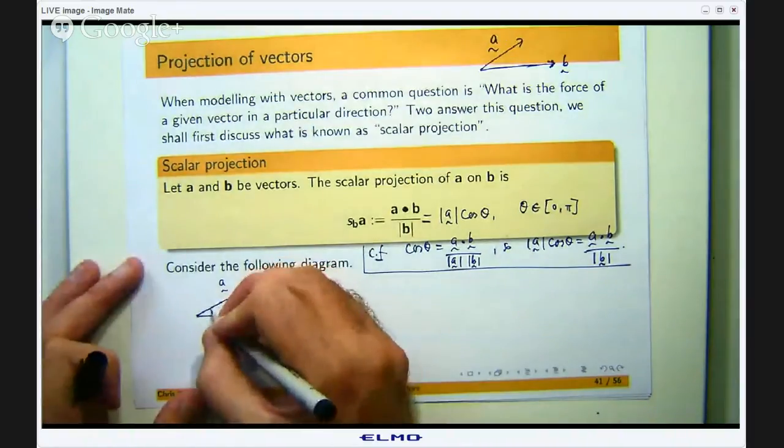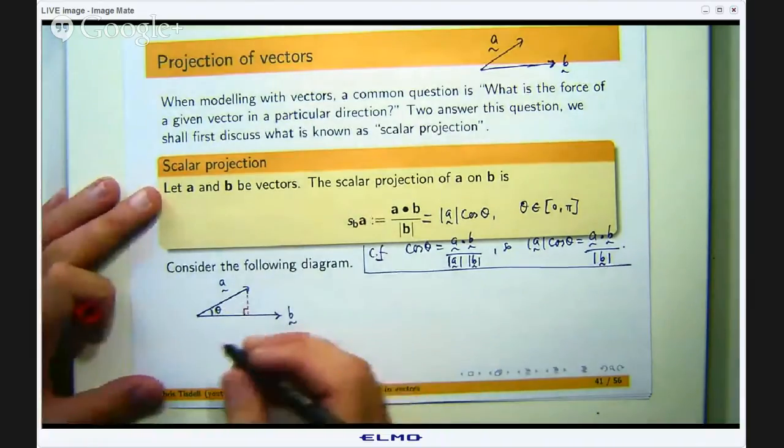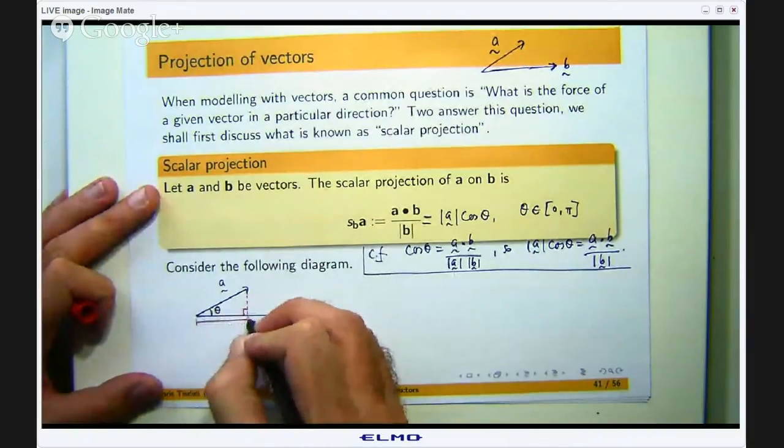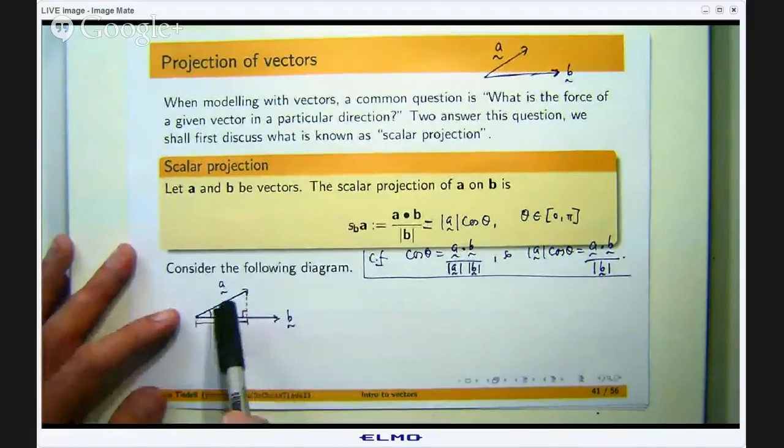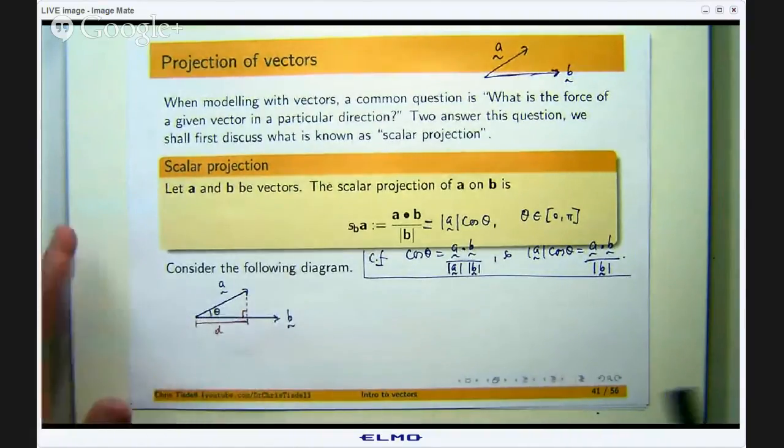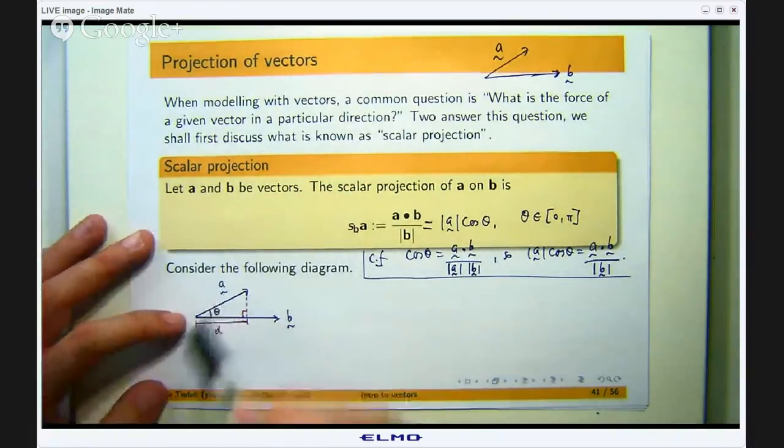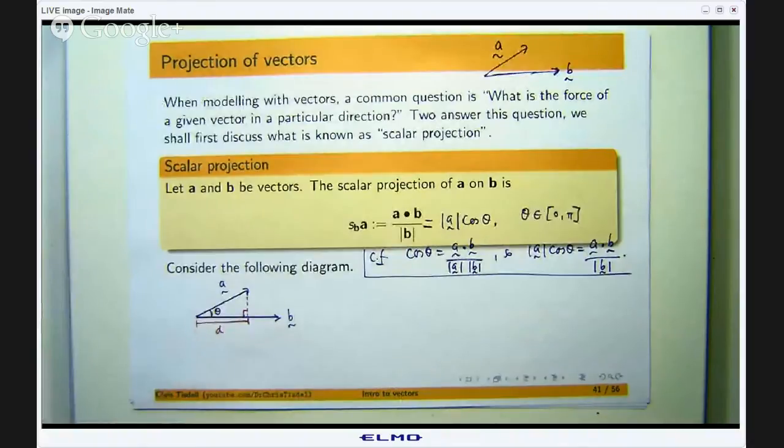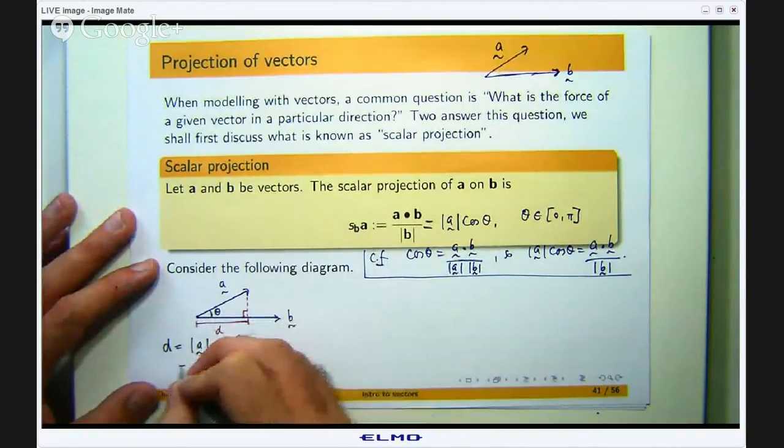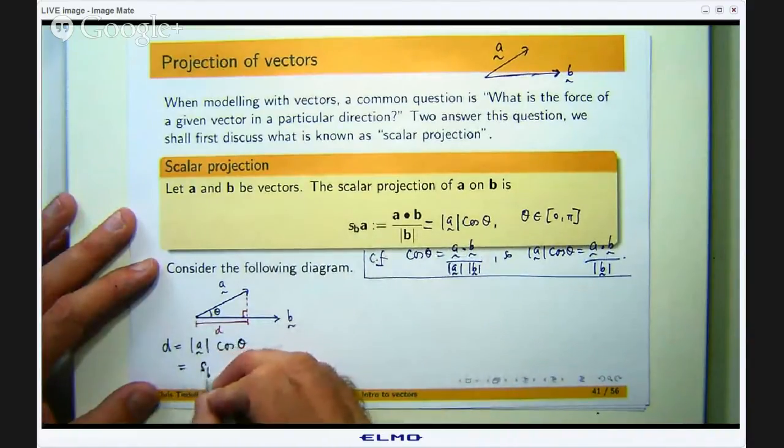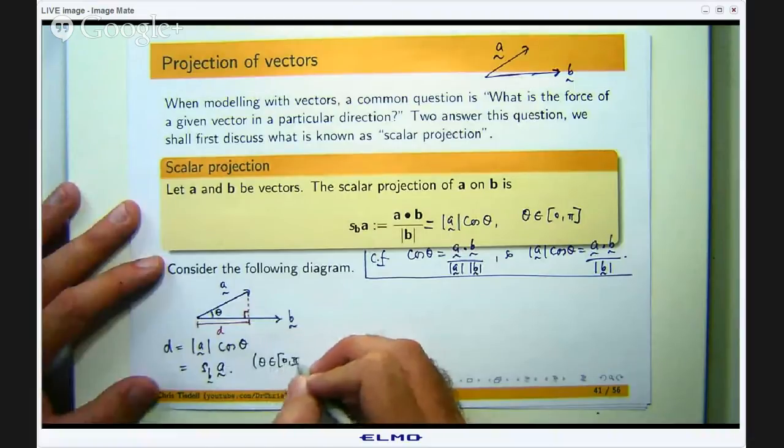Now the angle between the two vectors is θ and what this scalar projection measures is, in this case where θ is between 0 and π/2, this length here. I know with trigonometry that the cosine of this angle is adjacent over hypotenuse, the cosine of the angle is adjacent over hypotenuse. So that is d over the magnitude of A, so if I rearrange I will get the following, which is S sub B of A.